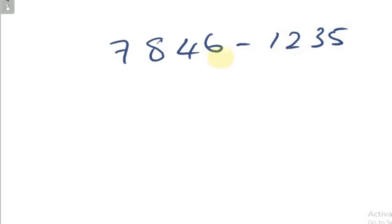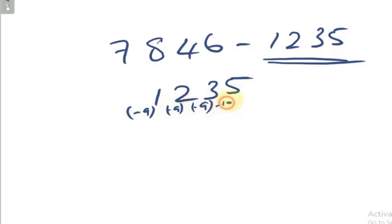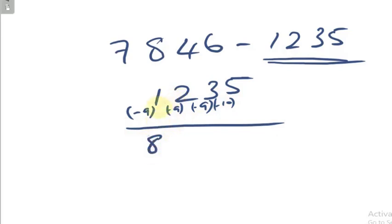The complement of 1235: subtract from 9, 9, 9 and 10 respectively. So: 9 minus 1 is 8, 9 minus 2 is 7, 9 minus 3 is 6, 10 minus 5 is 5. The complement of 1235 is 8765.